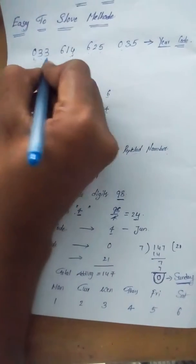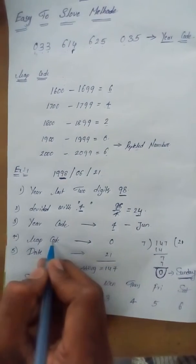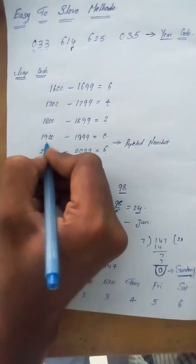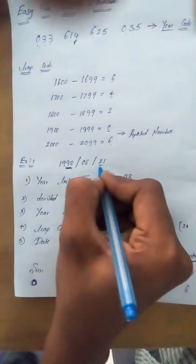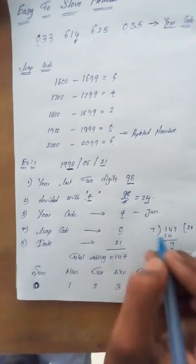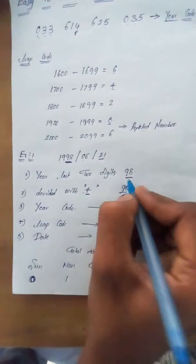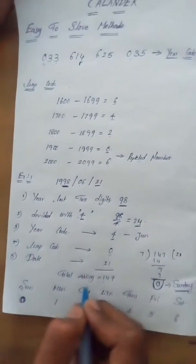June is month 6 with code 4. The year 1998 falls in 1900-1999, so year code is 0. The day is 21. Now add all components: 98 plus 24 plus 4 plus 21 equals 147.